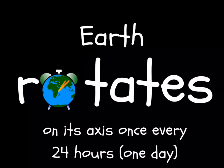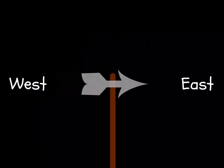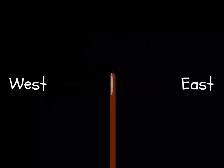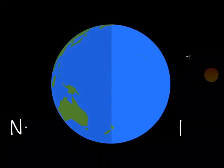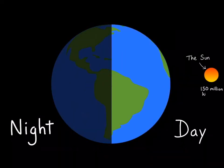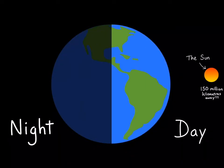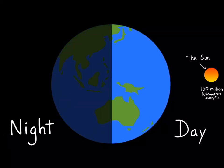Earth rotates on its axis once every 24 hours, or one day, and rotates from west to east. When we are facing the Sun it is daytime, and when we are facing away it is night. The Sun appears to move across our sky during the day, but this is in fact the rotation of the earth on its axis.